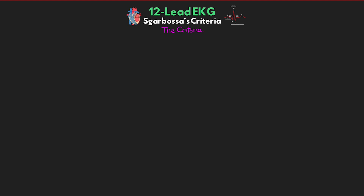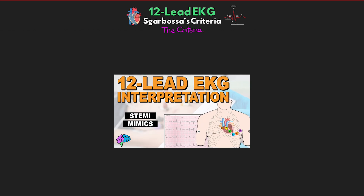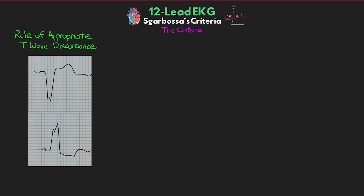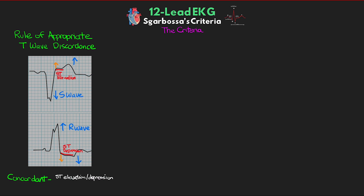I'm going to be discussing Smith's modification to Sgarbossa's Criteria here. But first, remember that in left bundle branch block, from our previous discussion on STEMI mimics, we have something called the rule of appropriate T-wave discordance. We expect to see the T-wave in the opposite direction of the predominant R or S-wave, as well as the J-point pulled in the direction of the T-wave, giving us the appearance of either ST depression or ST elevation. Knowing this, if we see what we call concordant ST elevation or depression, that can actually be an indicator of STEMI — concordant meaning the ST elevation or depression is going the same direction as the predominant R or S-wave.